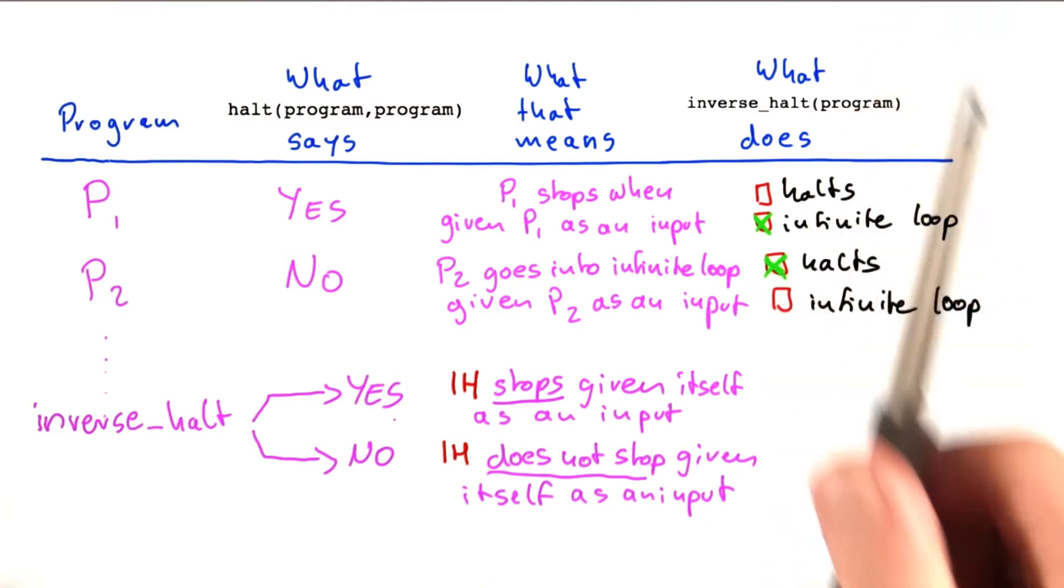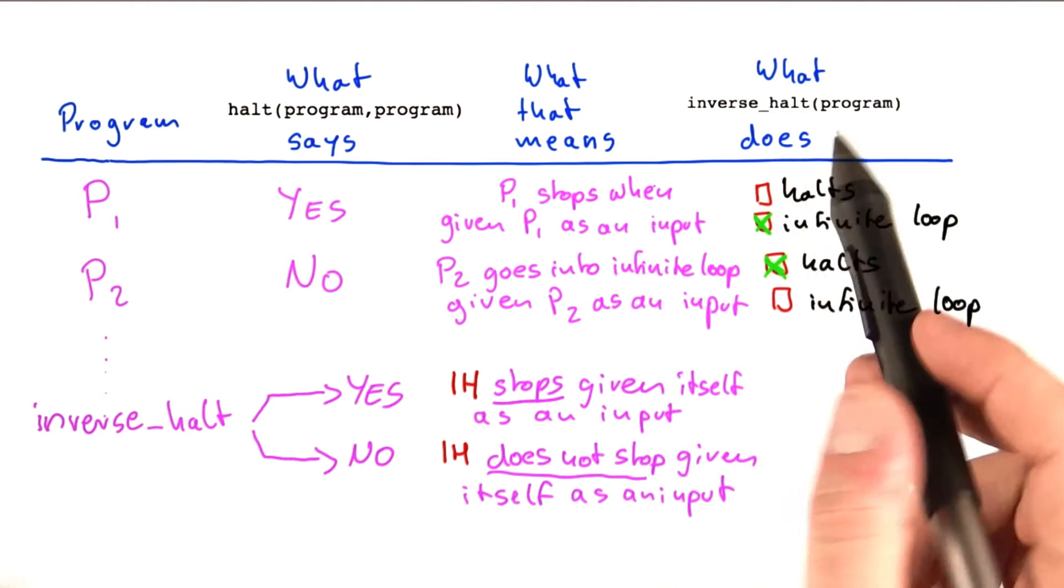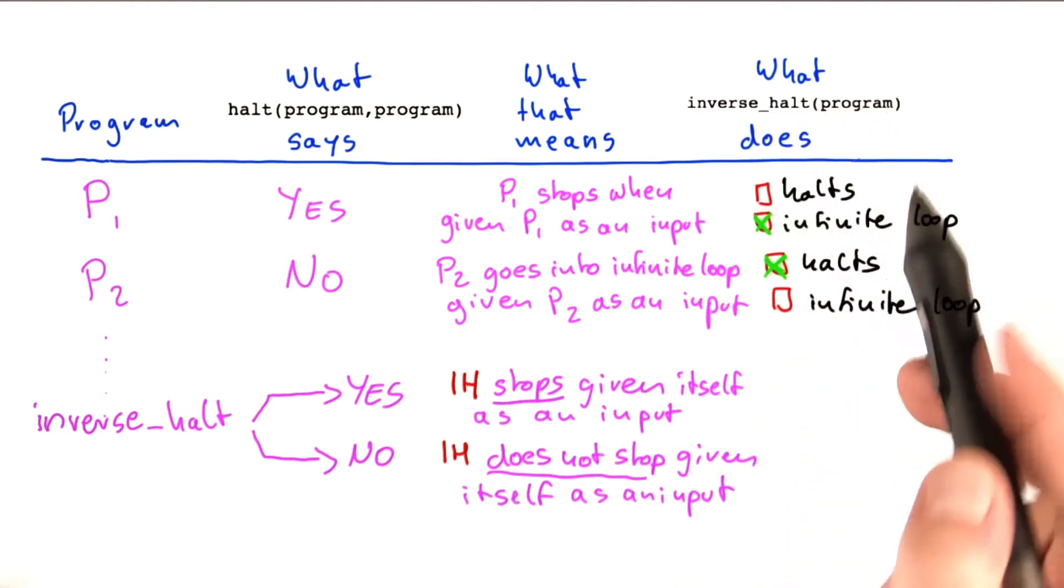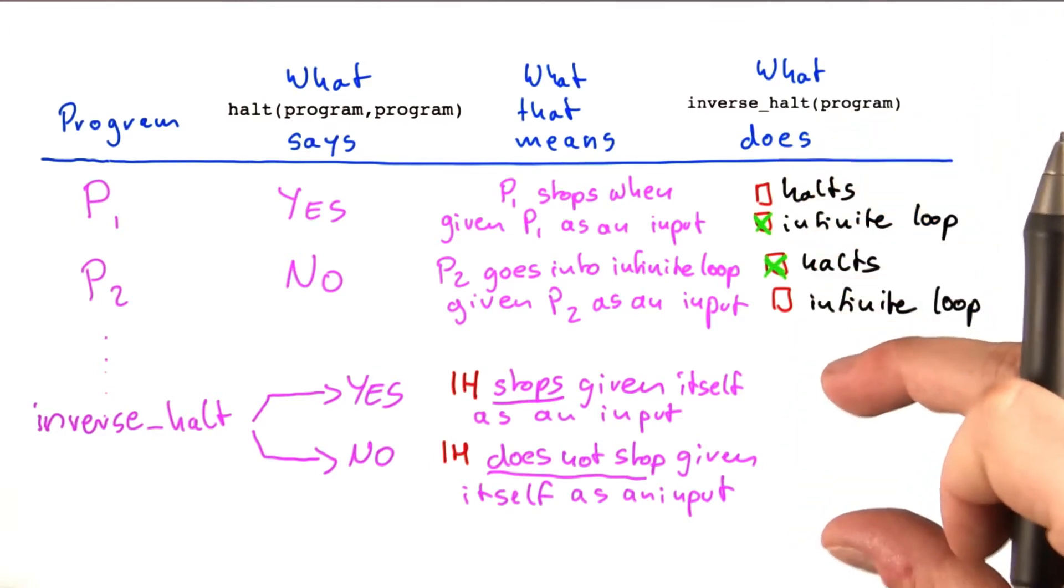Now, let's read it another way because what we noticed here is that if the program stops when it's given itself as an input, inverse halt on this program should go into an infinite loop. In other words, if we transfer what we did here to down here,